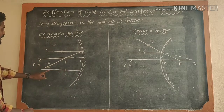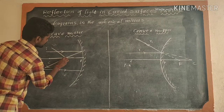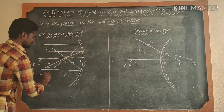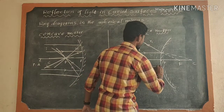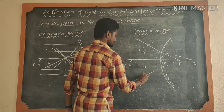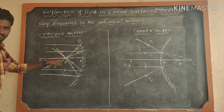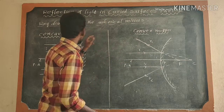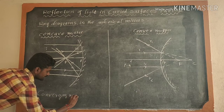This is also parallel to the principal axis. From that point, a reflected ray is formed. Another incident ray passes through along the focus — this is incident ray I2. The reflected ray passes through along the focus. All reflected rays are converging on the focus in the concave mirror — that is why the concave mirror is called a converging mirror. In the convex mirror, all reflected rays diverge from the reflecting surface, so the convex mirror is called a diverging mirror.